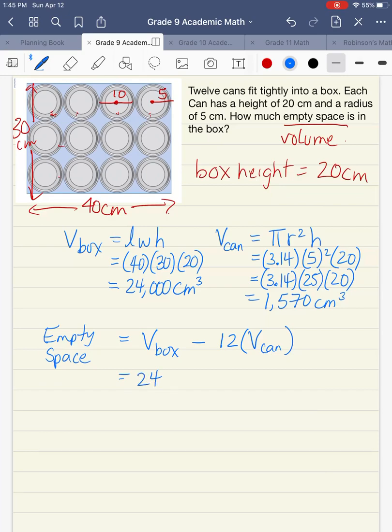We found that the volume of our box is 24,000 and the volume of one can is 1570. We need to make sure that we follow BEDMAS. We're going to do our multiplication first and 12 times 1,570, we get 18,840. And then we're just left with the subtraction. 24,000 minus 18,840 gives us 5,160 centimeters cubed.